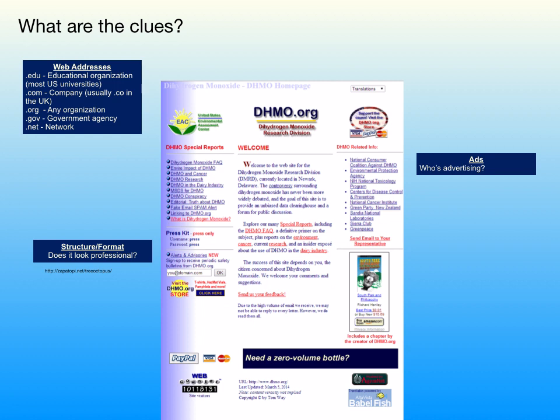The structure of the page is not very professional looking — it's lots of different colours and looks like old-school web design. Does it look professional? That goes back to the accuracy of it — it doesn't look like a professional scientific-based website. There are also clues in the advertising: the advertisement on this page is for a South Park product. A reputable scientific publication probably wouldn't be advertising South Park merchandise. So it's about being able to look at the sources we're using and determining whether they're good or not so good.